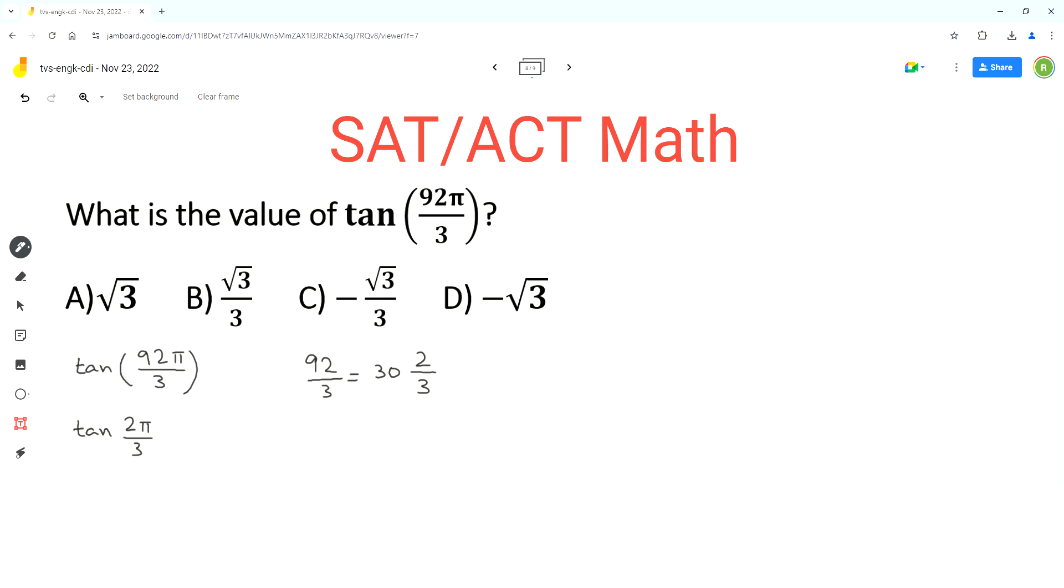Next we can use ASTC rule or the CAST rule, also called All Students Take Calculus rule, or the unit circle to evaluate tan 2π over 3. 2π over 3 lies in quadrant 2.